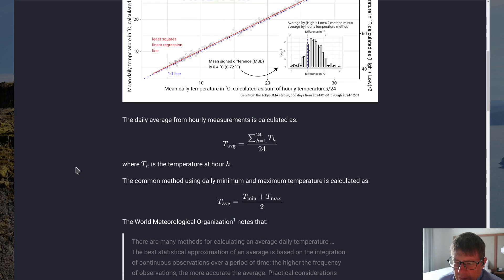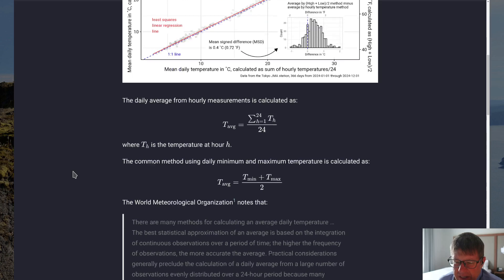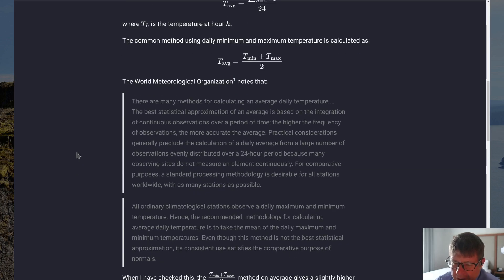And I want to read a quote that I put in here from the World Meteorological Organization that explains this in detail. Here's the quote from the World Meteorological Organization. There are many methods for calculating an average daily temperature. The best statistical approximation of an average is based on the integration of continuous observations over a period of time. The higher the frequency of observations, the more accurate the average. Practical considerations generally preclude the calculation of a daily average from a large number of observations evenly distributed over a 24-hour period because many observing sites do not measure an element continuously.